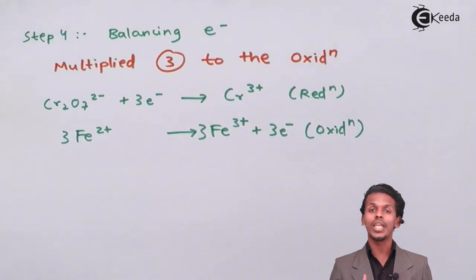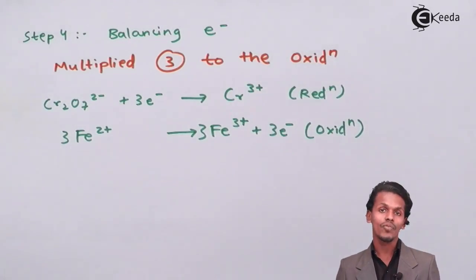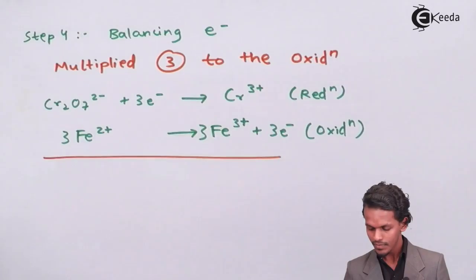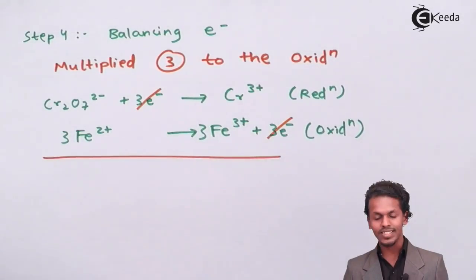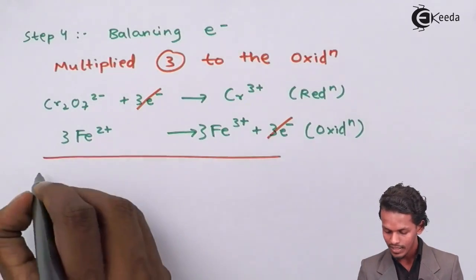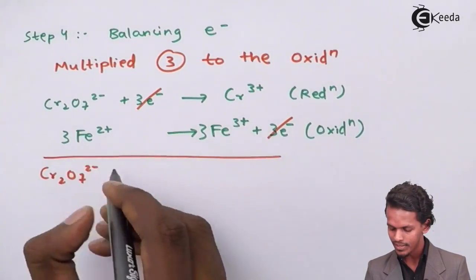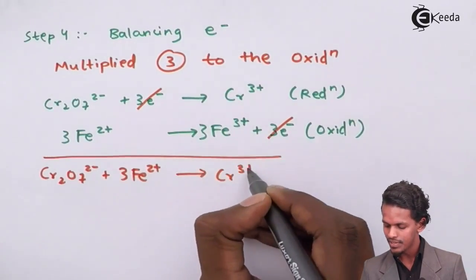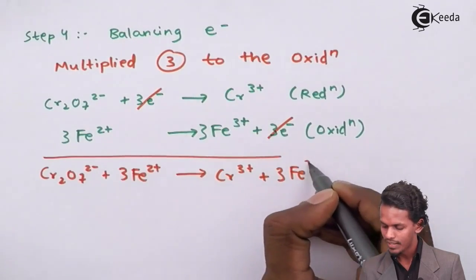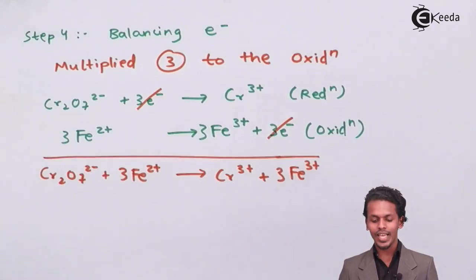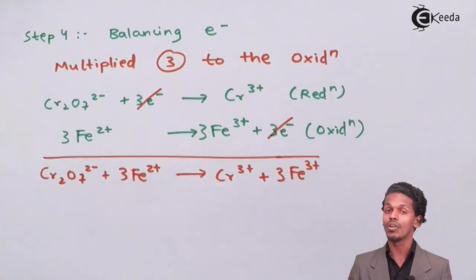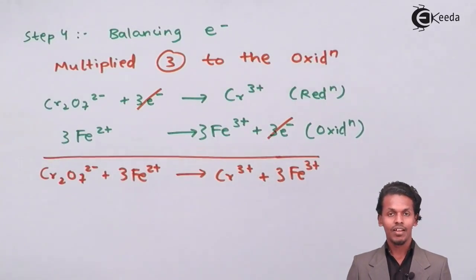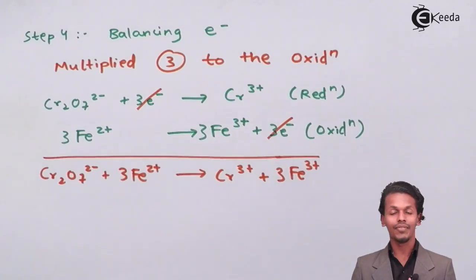By equating the two half-cell reactions, the 3 electrons on each side cancel out, giving us: Cr₂O₇²⁻ + 3Fe²⁺ → Cr³⁺ + 3Fe³⁺. This equation is balanced with respect to electrons, but the oxygen atoms on the left-hand side and right-hand side still need to be balanced.